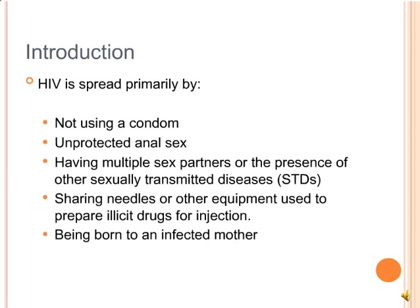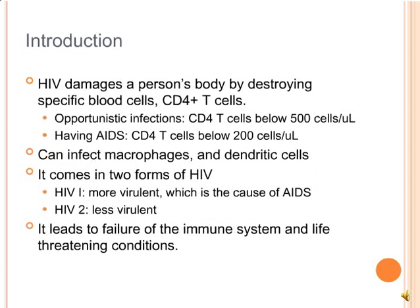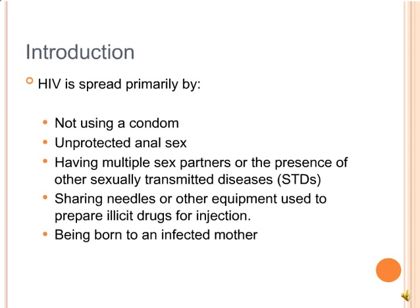HIV is spread primarily by not using a condom, unprotected sex, having multiple sex partners, or the presence of other sexually transmitted diseases, sharing needles or other equipment used to inject illicit drugs, and being born to an infected mother.